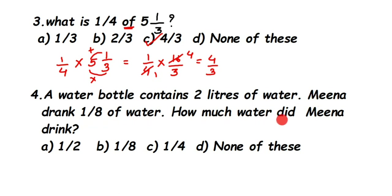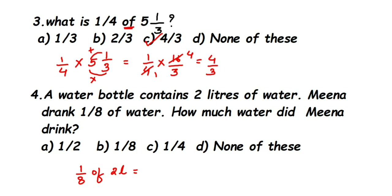The next question: a water bottle contains 2 liters of water. Mina drank one eighth of the water. How much water did Mina drink? We have to find 1/8 of 2 liters. 'Of' means multiplication: 1/8 × 2. Cancel 2: 2×1=2, 2×4=8, giving 1/4. So option C is correct — she drank one fourth of a liter.